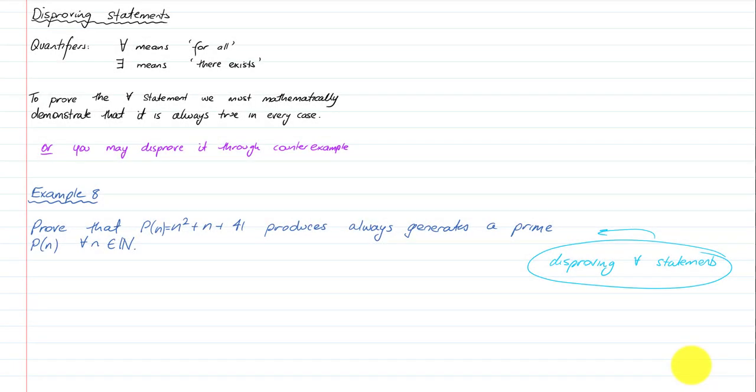Hi, and welcome to Unit 1, Topic 3, Video 8. In this video, we're going to talk about disproving statements. It really plays on well with Video 7 — it's definitely worth watching Video 7 first. In Video 7, we talked about proving statements that were implied or equivalent. This is going to be a summary on how we could disprove statements that are made, but there might not be implication or equivalency. Maybe it'll just be a simple algebraic statement as well.